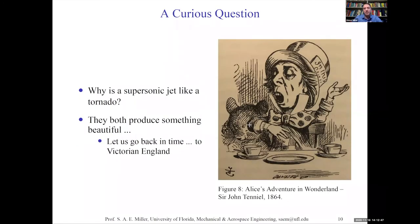So you might ask: specifically mathematically, why is the supersonic jet like a tornado? How can I get away with performing research funded traditionally by NASA for rockets and ONR for jets, and then get into tornado work? It's because they both produce something very beautiful — as you imagine, that might be turbulence. These questions came out in Victorian England in the 1800s, and I'll turn to Alice's Adventures in Wonderland to set up this part.